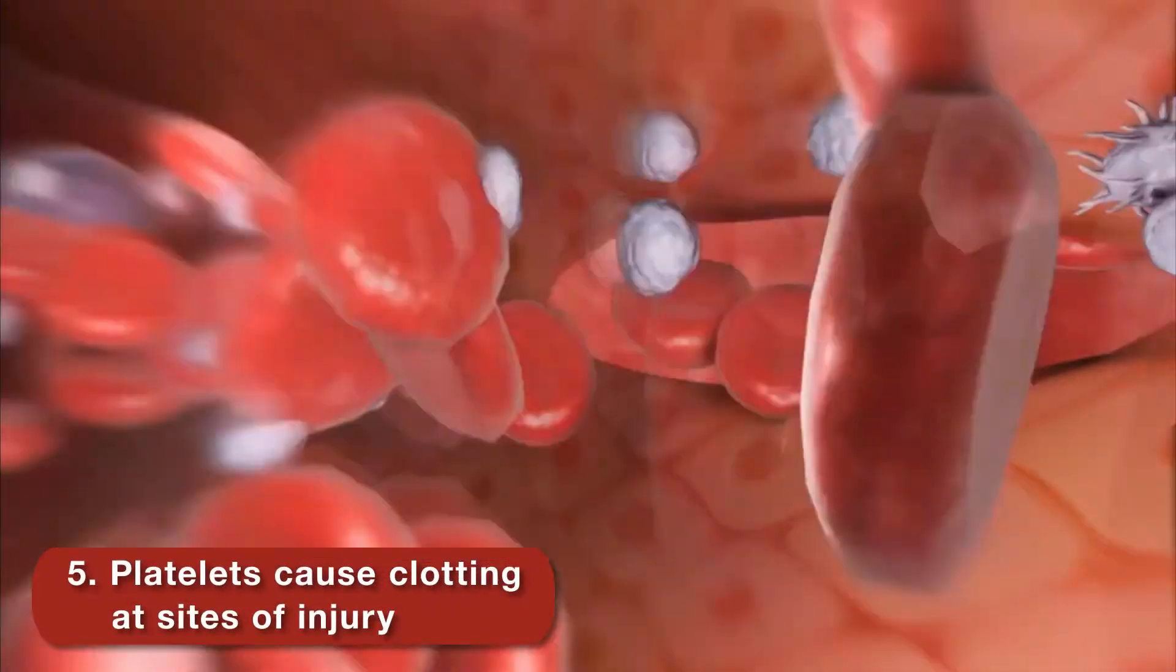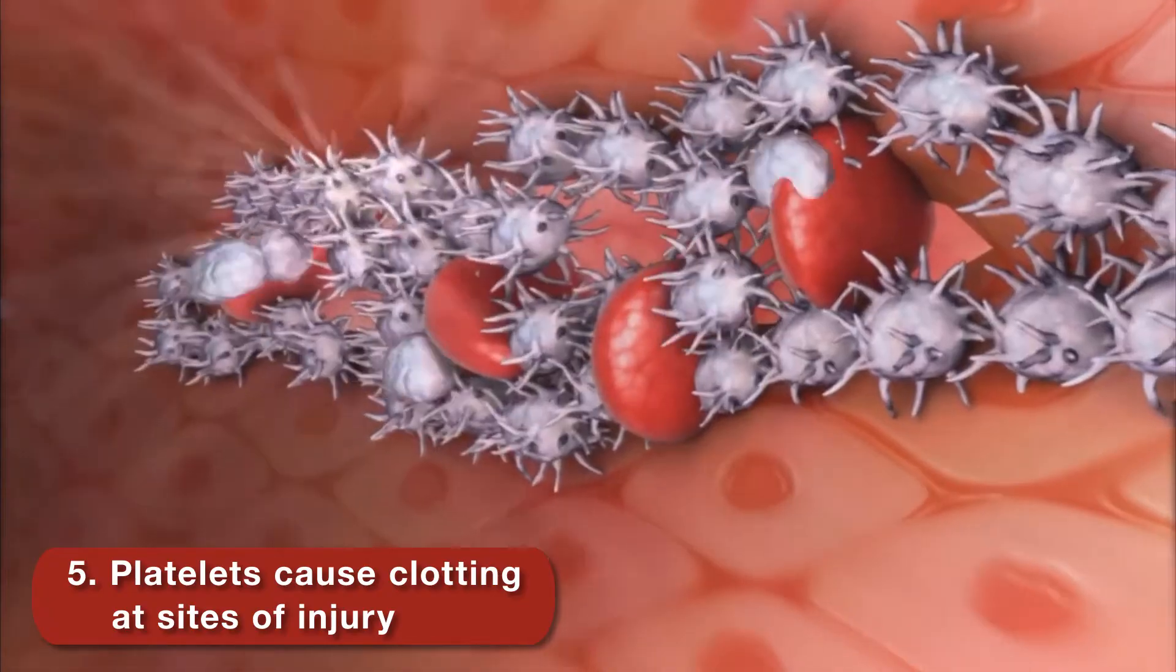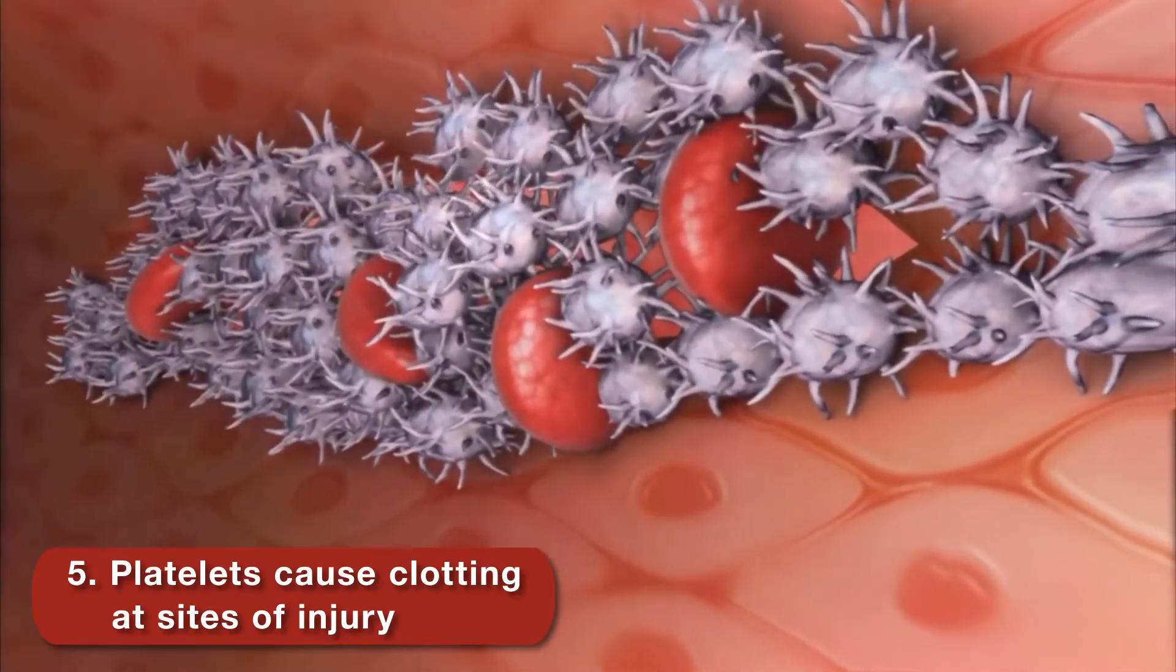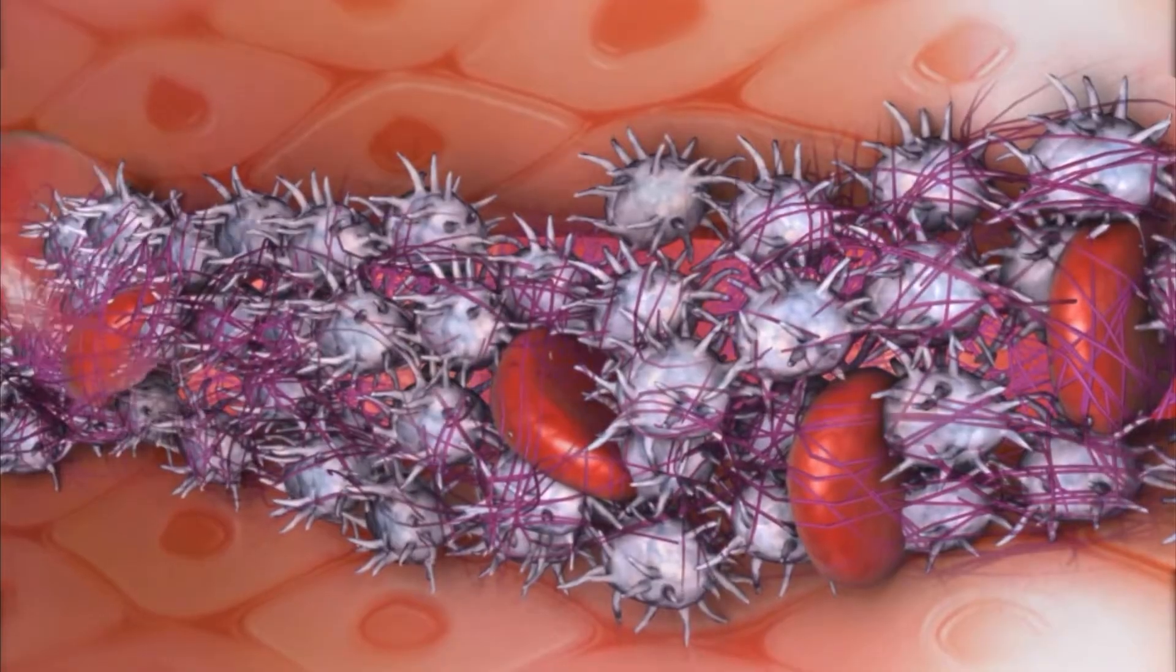When a blood vessel tears, platelets and plasma proteins work together to stop blood loss. Platelets clump and form a plug in the damaged area. The proteins form threads called fibrins to complete the clot.